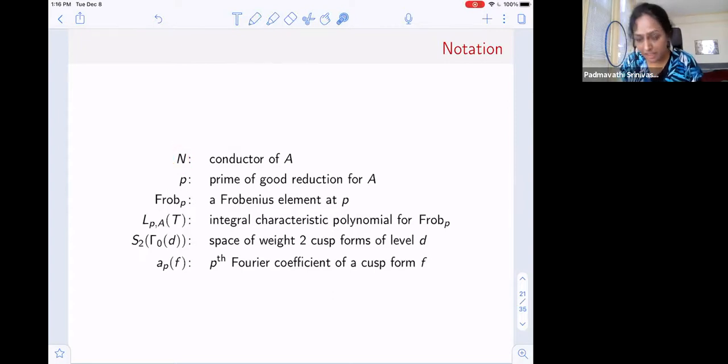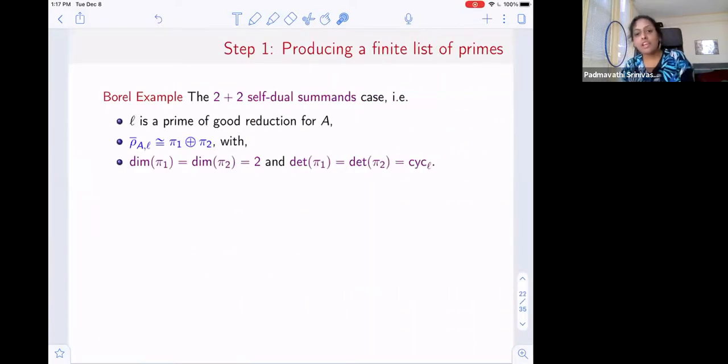For talking about the rest, I need N to be the conductor of my abelian surface. Like I said, our main technique is to sample various Frobenius elements at auxiliary primes. So P is going to be a prime of good reduction, Frob_P the Frobenius element at P. L_P is going to be the integral characteristic polynomial of Frobenius. There's a polynomial with Z coefficients. We also have modular forms also showing up. So we have standard notation S_2(Gamma_0(D)), the space of weight two cusp forms of level D, and a_P(F) the Fourier coefficient of a cusp form F. So the case I'm going to tell you about in step one, where we generate a list of primes, is going to be one of these Borel cases, what we call the two plus two self dual summands.